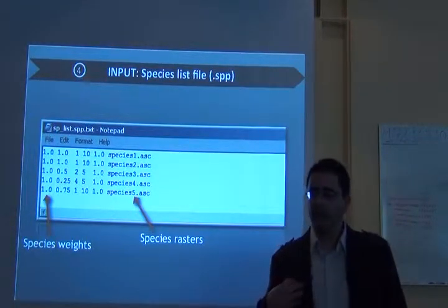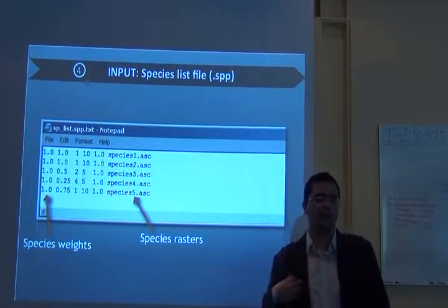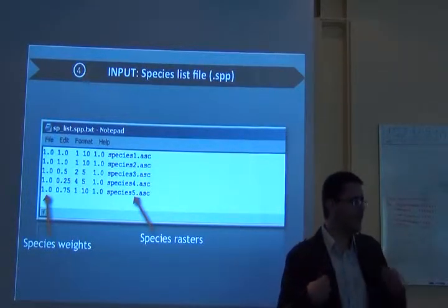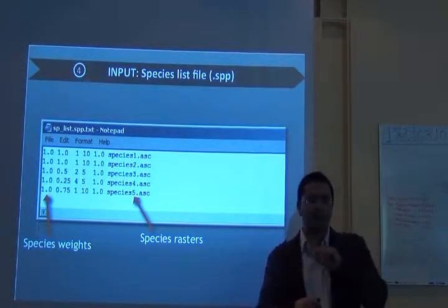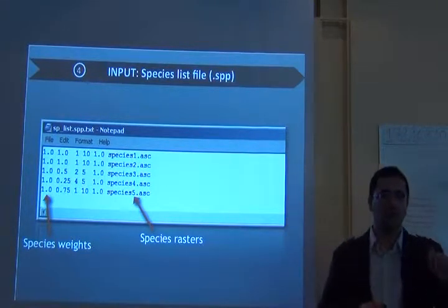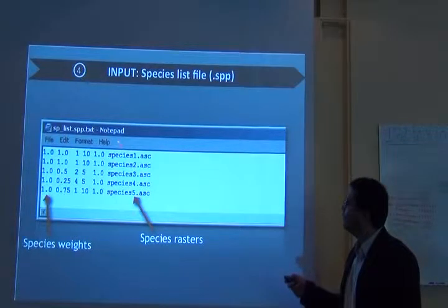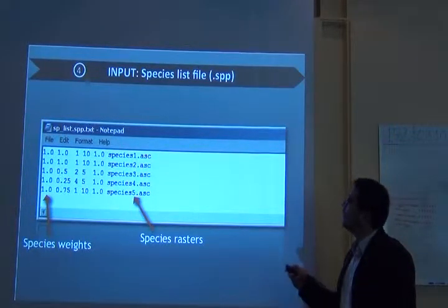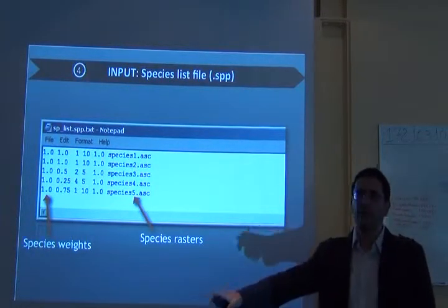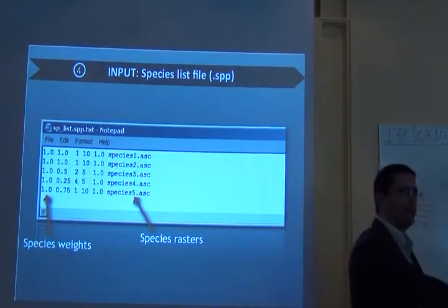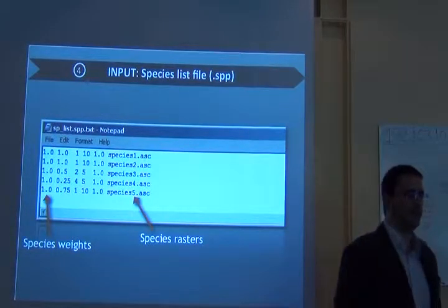You see that the rasters we will be using in our sample data, they are the name of the species. So you have Acinonyx jubatus.asc. And here is the name of the file. Because zonation will read this file, the species list file, and from within this file it will search the raster for the feature.